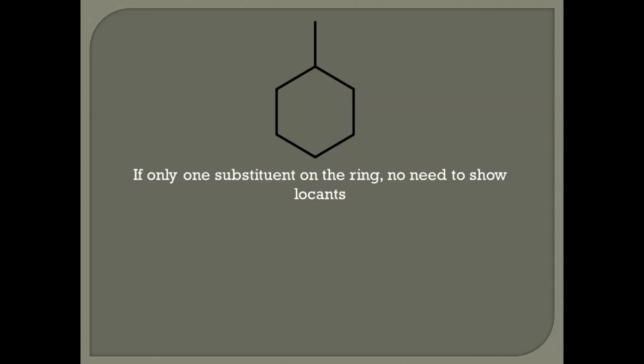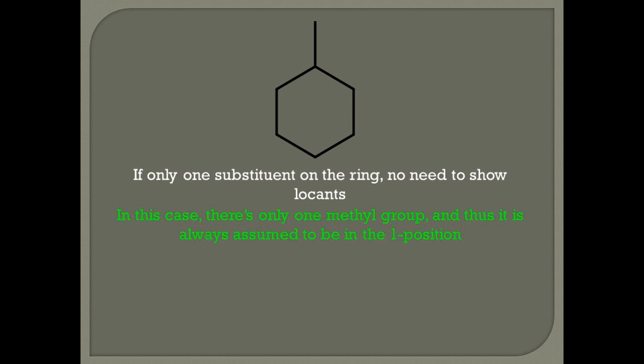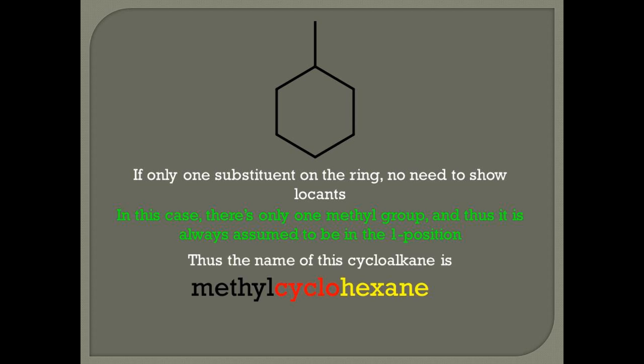Rule 2. If only one substituent is on the ring, there is no need to show the locant for the substituent. In this case, we have a six-membered ring and there is only one methyl group. Therefore, it's always assumed that this methyl group is in the number one position. The name of the cycloalkane is methylcyclohexane — no need to indicate 1-methylcyclohexane.